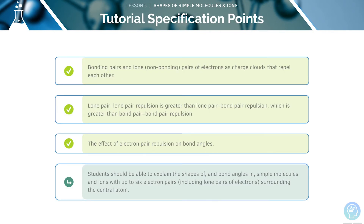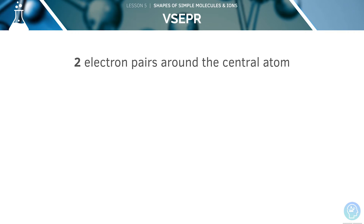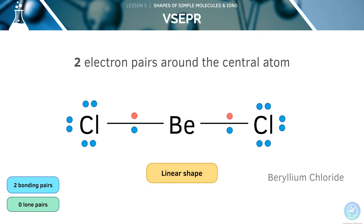Let's move on to our final specification point, covering the shapes of, and the bond angles in, simple molecules and ions. Let's go through each type of shape possible — you should remember these shapes and relevant bond angles for your exams. If there are two electron pairs around the central atom, such as in beryllium chloride, we will get something called a linear shape. Beryllium is in group 2, but the electronegativity difference between beryllium and chlorine is not great enough for ions to be formed, so a covalent compound is formed instead. Beryllium has two outer electrons and is forming two covalent bonds, meaning it has no lone pairs and two bonding pairs. The bond angle is 180 degrees.